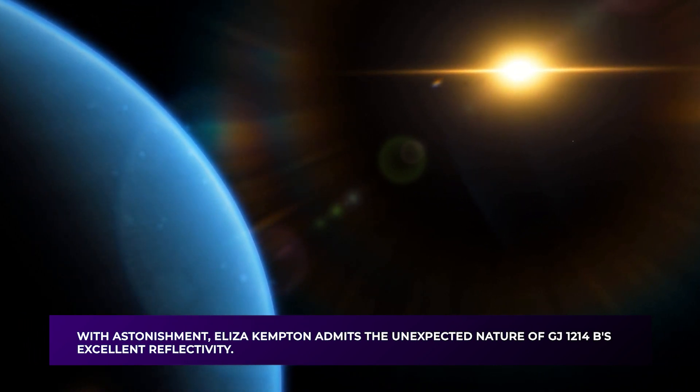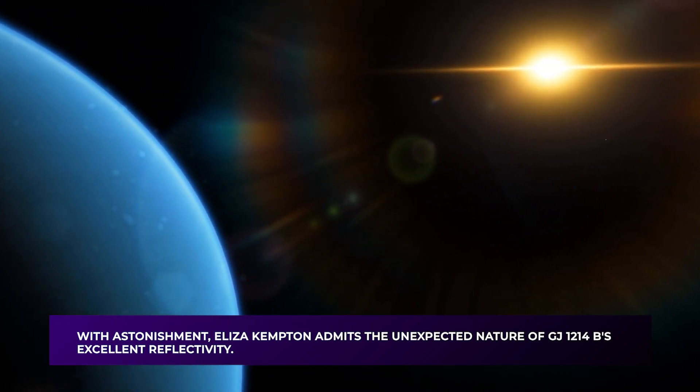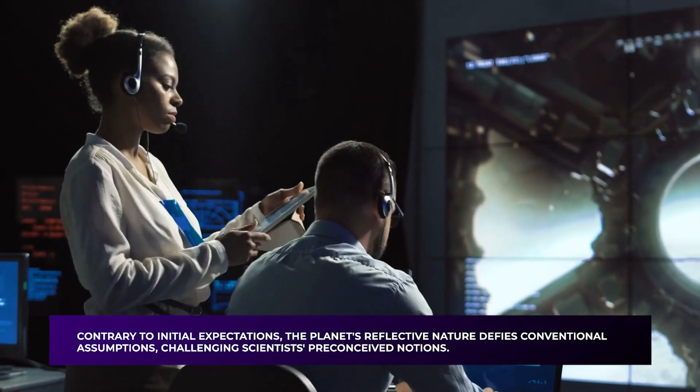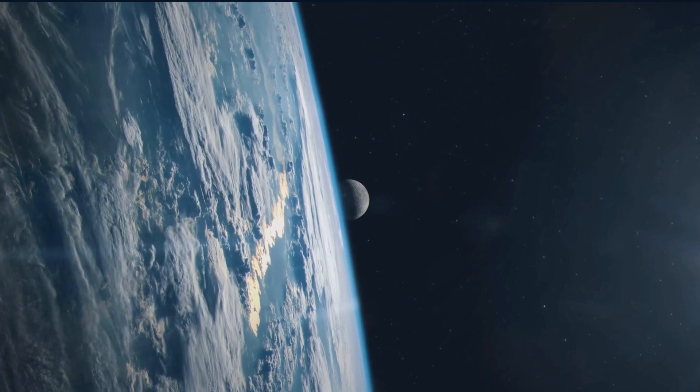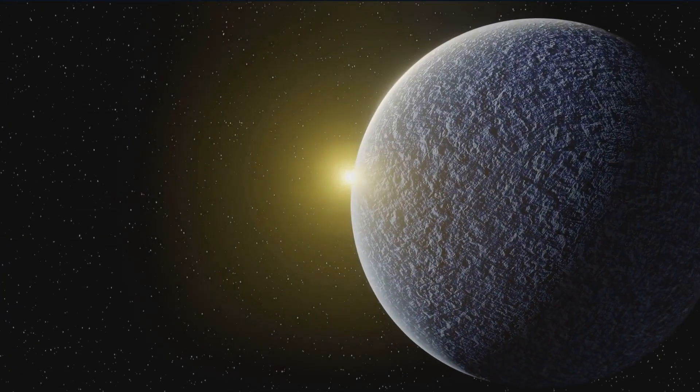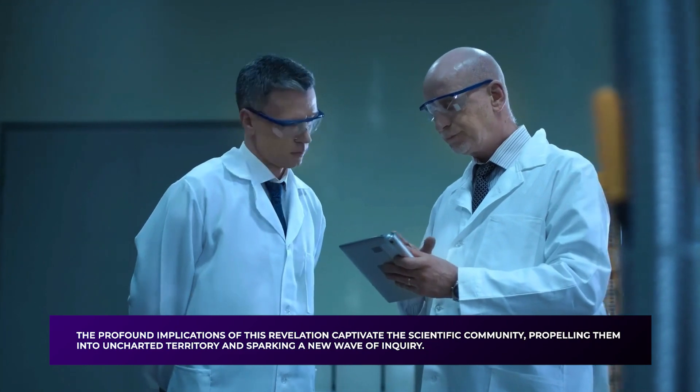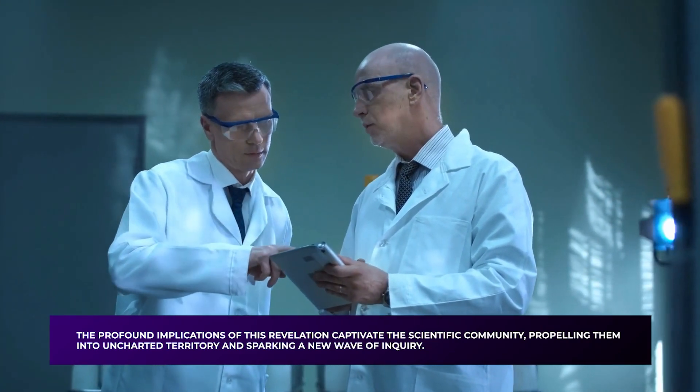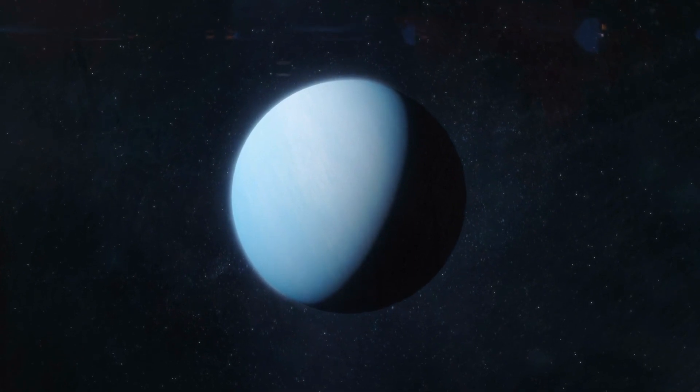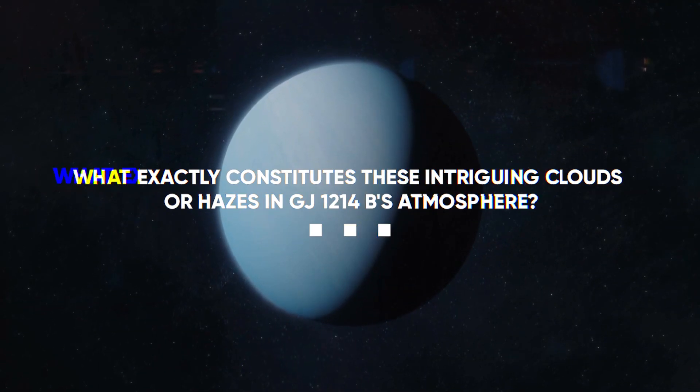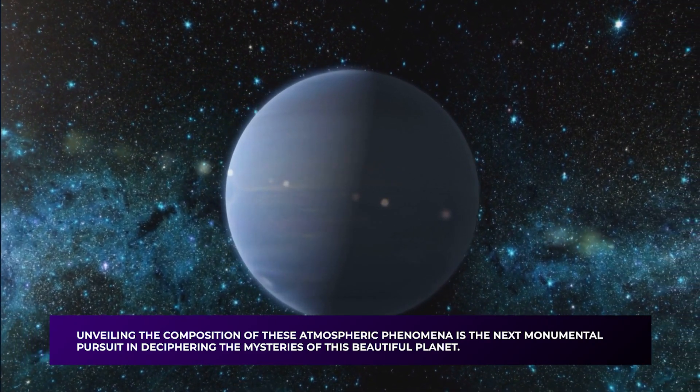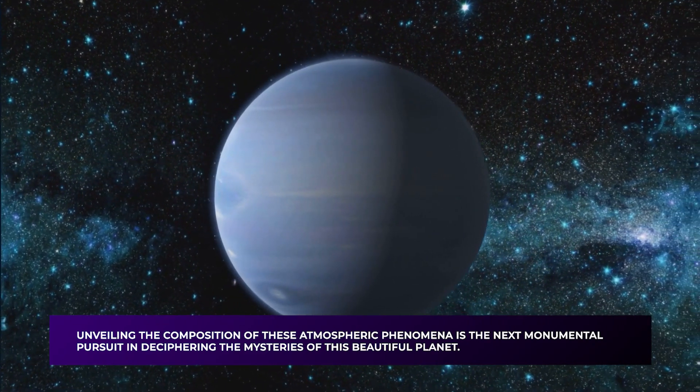With astonishment, Eliza Kempton admits the unexpected nature of GJ-1214b's excellent reflectivity. Contrary to initial expectations, the planet's reflective nature defies conventional assumptions, challenging scientists' preconceived notions. The prevailing hypothesis proposed that the planet's enshrouding clouds consisted of a dark, sooty haze. However, this notion no longer aligns with the observed light reflection. The profound implications of this revelation captivate the scientific community, propelling them into uncharted territory and sparking a new wave of inquiry. Eliza Kempton underscores the significance of this realization, highlighting the critical question: what exactly constitutes these intriguing clouds or hazes in GJ-1214b's atmosphere? Unveiling the composition of these atmospheric phenomena is the next monumental pursuit in deciphering the mysteries of this beautiful planet.